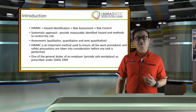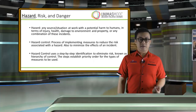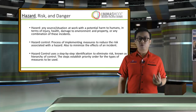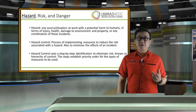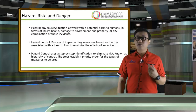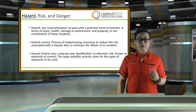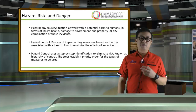It is one of the general duties of an employer to provide a safe workplace as prescribed under OSHA 1994. Hazard can be defined as any source or situation at work with a potential harm to humans in terms of injury, health, damage to environment and property, or any combination of these incidents. Hazard control is a process of implementing measures to reduce the risk associated with the hazard, also to minimize the effects of an incident. Hazard control uses a step-by-step identification to eliminate risk known as hierarchy of control, which will be covered in a later part of this unit.